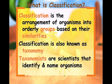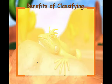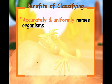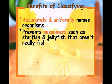Taxonomists are scientists that identify and name organisms. We classify in order to accurately and uniformly name organisms — 'uniformly' meaning the same names are used. This prevents misnomers: for example, starfish and jellyfish aren't really fish.